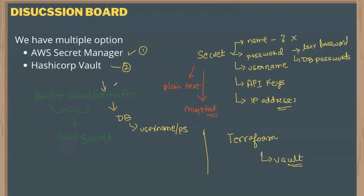Here is the second variation if you are mentioning Terraform: 'In my current project, we are using Terraform heavily to spin up and maintain infrastructure resources. We found HashiCorp Vault to be an easy solution to store secrets, as Terraform's HashiCorp Vault plugins are very easy to use. While we could also use AWS Secret Manager, our senior architects decided to use Vault as a single storage for all passwords in our organization, and hence we are using HashiCorp Vault.'